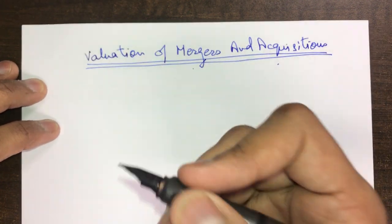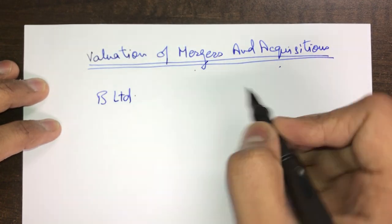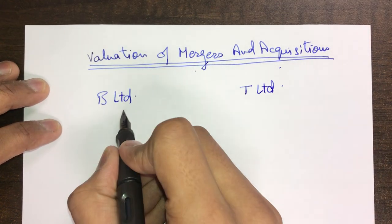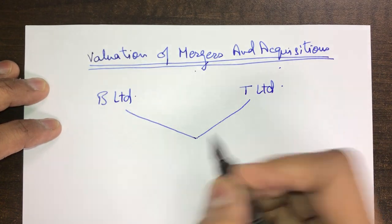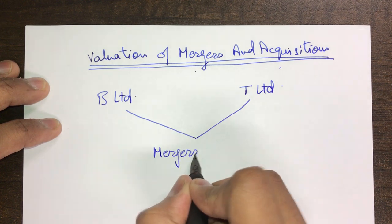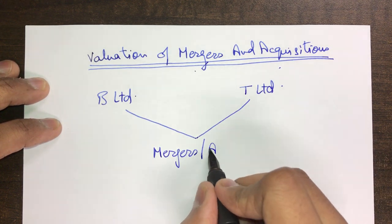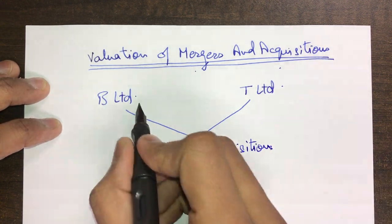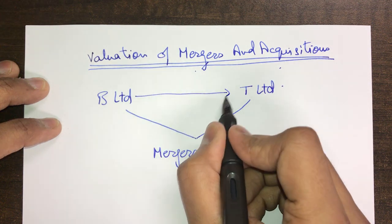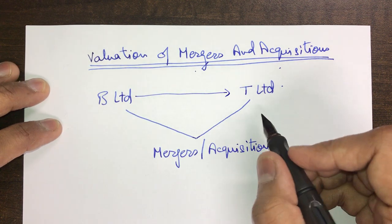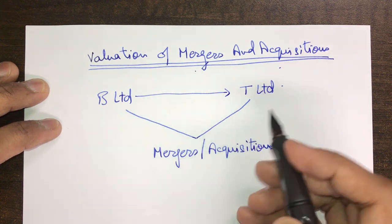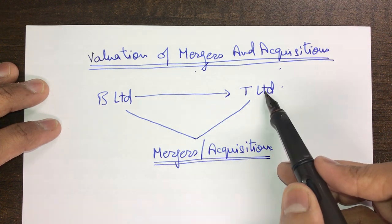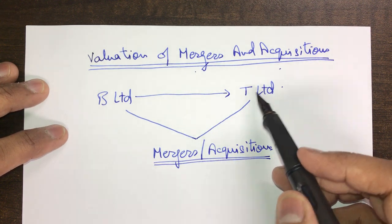First we need to understand what is meant by merger and acquisition. There are two companies — B Limited and T Limited. If both these companies decide to join hands and carry out their business together, it is known as a merger. If one of these companies, say B, acquires T Limited and carries on the business in a consolidated fashion, then it is known as an acquisition.